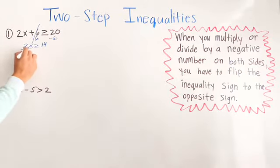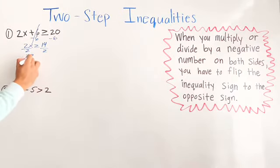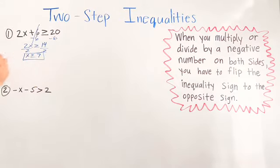Then we're going to divide by 2. Now we have x is greater than or equal to 14 divided by 2, which is going to be 7. So the answer is x is greater than or equal to 7.